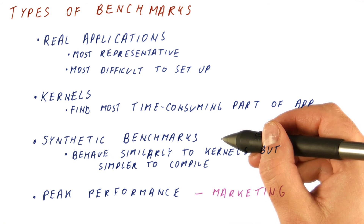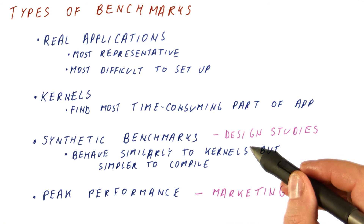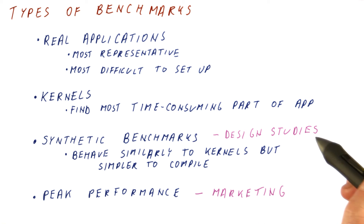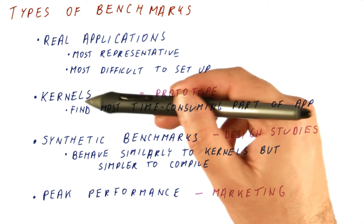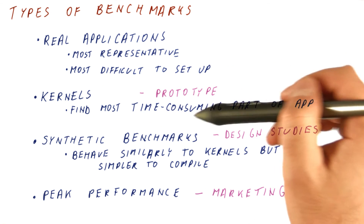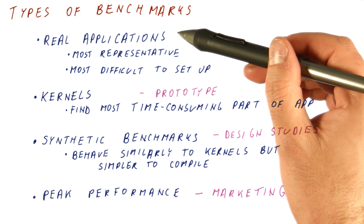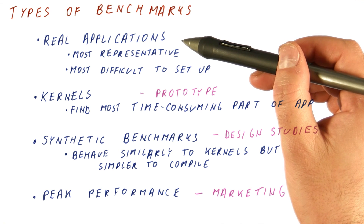Synthetic benchmarks are usually very good for design studies of potential new machines, but they're not very good for actually reporting performance to others. We can use them just to see how well we expect a design to behave, so that we can choose among multiple possible designs. Once we actually build a machine, we can use kernels to test the performance of a prototype. And finally, we should be using real applications if we are comparing actual machines that we are trying to, for example, sell to somebody.